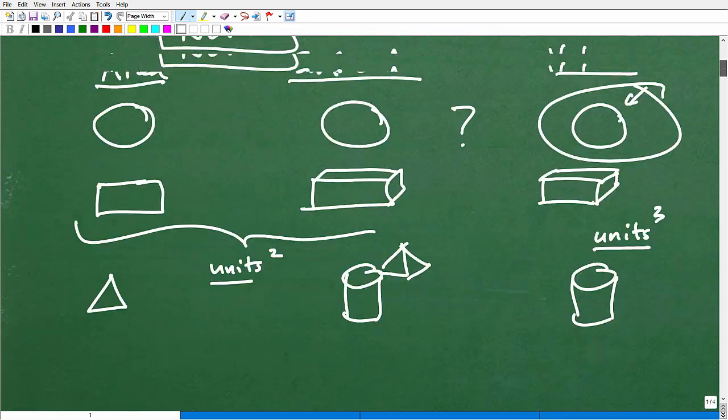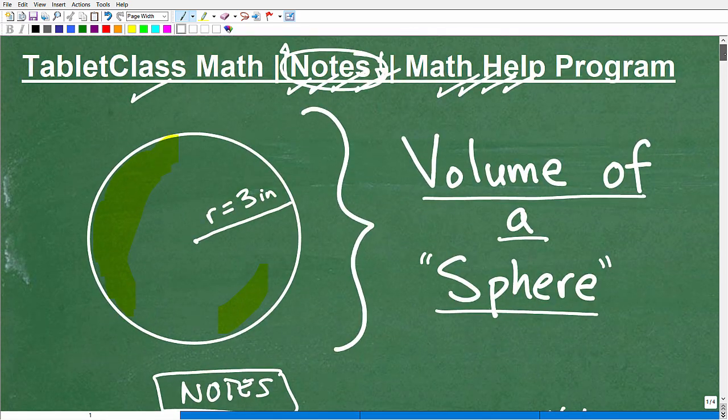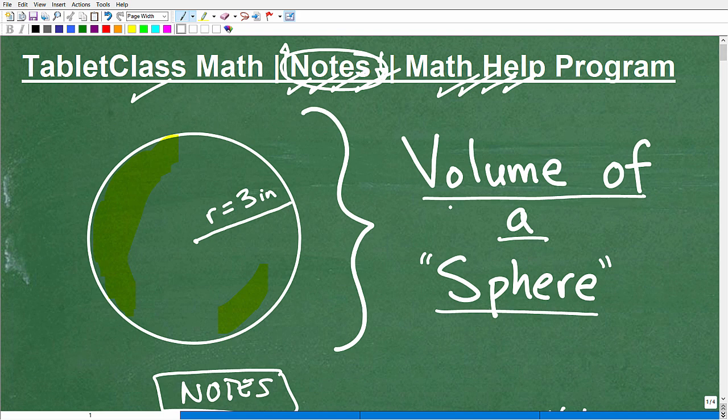So when you're dealing with volume of sphere problems, you can kind of get both varieties. You can be given the volume, and then they might be asking for the radius. Or they might give you the volume, and they might ask for the surface area. So you still have to get the radius and do some other calculations. All kinds of crazy good stuff. I tell you, math is just so much fun. There's just so much you can do with all these formulas and all these concepts.